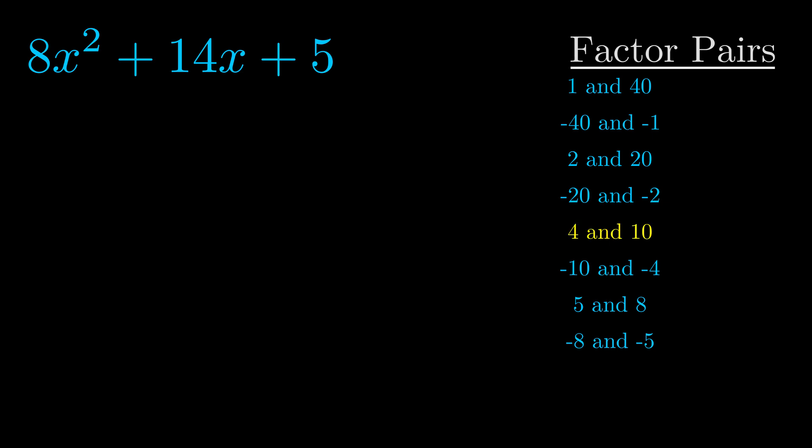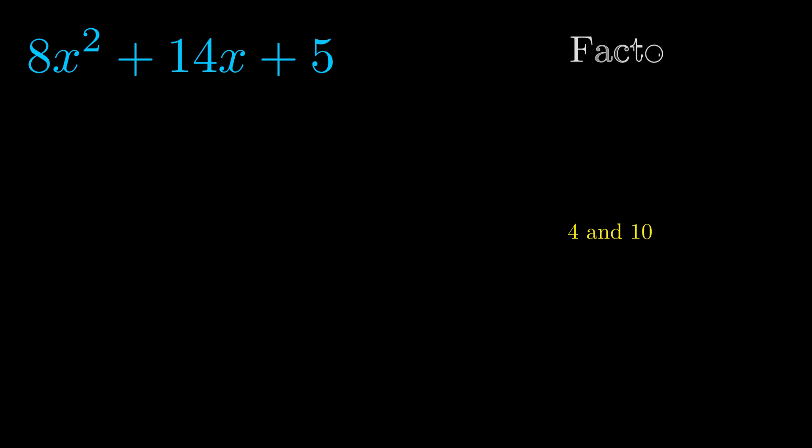And really this is the only factor pair that we need. Now once we have this factor pair what we want to do is use it to split up the b value.